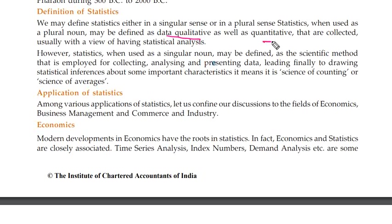Now, qualitative data and quantitative data. What is qualitative data? Qualitative data is the data which you can't quantify in numbers. Quantitative data is data which you can quantify in numbers. For example, if I talk about beauty, I cannot quantify it in a number — so that is qualitative data. Quantitative data — I can tell you how much weight: 1 kg, 2 kg — which you can measure in basic units.